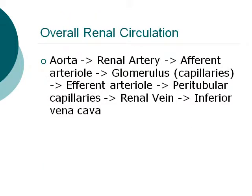I'll quickly go over how the overall renal circulation works. First, blood goes through the aorta and then to the renal artery, then to the afferent arteriole, then to the glomerulus and its capillaries, and then to the efferent arteriole, then the peritubular capillaries, then to the renal veins, and finally to the inferior vena cava.